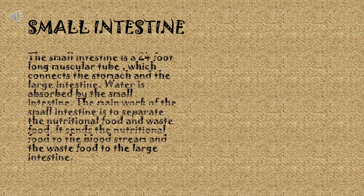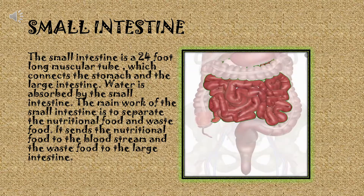Small Intestine. The small intestine is a 24-foot-long muscular tube which connects the stomach and the large intestine. Water is absorbed by the small intestine. The main work of the small intestine is to separate nutritional food from waste food. It sends the nutritional food to the bloodstream and the waste food to the large intestine.